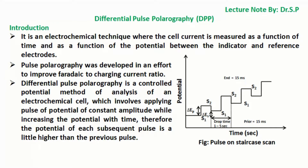Pulse polarography was developed in an effort to improve the faradaic to charging current ratio. Differential Pulse Polarography is a controlled potential method of analysis of an electrochemical cell, which involves applying a pulse of potential of constant amplitude while increasing the potential with time, so the potential of each subsequent pulse is a little higher than the previous pulse.